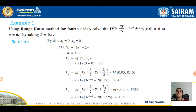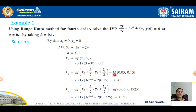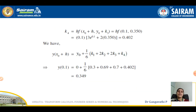Let us see another example — example 2: use the Runge-Kutta method of fourth order to solve the problem with y(0) = 0, at x = 0.1, taking h = 0.1. In reading the problem, you must understand how many stages are needed. Since x₀ = 0 and you need y at x = 0.1 with h = 0.1, only one stage is required. Write down x₀, y₀, f(x, y), h, evaluate k₁, k₂, k₃, k₄, and substitute into the final formula.